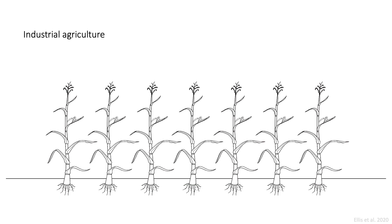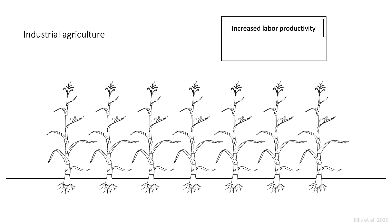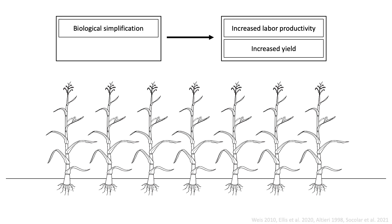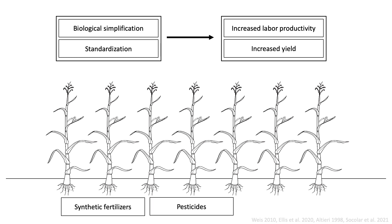Industrial agriculture is designed around two main goals: increased labor productivity, where the idea is to maximize output per worker, and increased yield, where the idea is to maximize output per plant or animal. Proponents of industrial agriculture argue that farmers must simplify and standardize crop production in order to achieve these goals. This means establishing monocultures and replacing ecosystem services with synthetic fertilizers, pesticides, and other technological fixes.